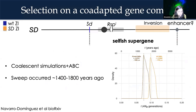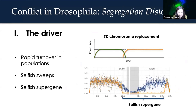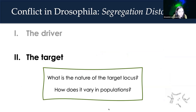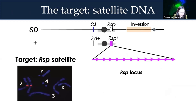Using coalescent simulations and approximate phasing computation, we estimate that this sweep occurred between 1,400 and 1,800 years ago — a very recent event. To summarize what I told you about the dynamics of the driver: we see very dynamic evolution of the driver over short evolutionary time scales — they can replace each other in populations — and in doing so, at least in this African population, they leave this giant signature of a large selective sweep over the selfish supergene.